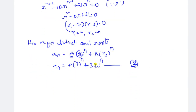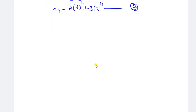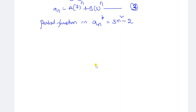Now we need to find the particular function. The particular function An^(p) corresponds to the right-hand side 3n² minus 1. Here we have a polynomial of degree 2, so the solution form for the particular part is: An^(p) equals A2·n² plus A1·n plus A0. If f(n) is a constant the solution is just A; if f(n) is linear the solution is A1·n plus A0; for n² form it is A2·n² plus A1·n plus A0.